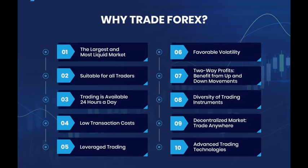Seventh, two-way profit — you can benefit from both up and down movements, because in futures you can short sell: sell first and buy later. Eighth, diversification — you don't have to buy only dollar; you can also buy euro, yen, or pound, diversifying your currency investments. If one currency pair underperforms, others may balance your portfolio. Ninth, decentralized markets — because it is an online trading system, you can trade from anywhere. Finally, advanced trading technologies — brokers use very advanced technologies so your trades are executed instantly, in fractions of a second. This is all about forex trading. Thank you.